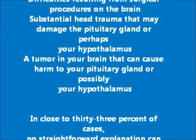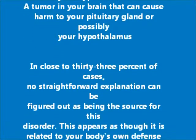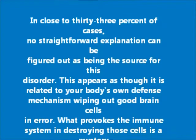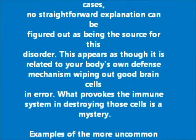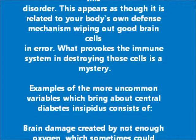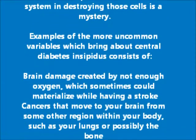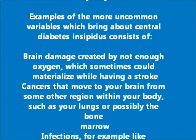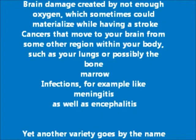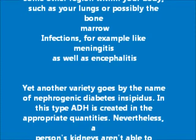In close to 33% of cases, no straightforward explanation can be figured out as the source for this disorder. This appears to be related to the body's own defense mechanism destroying good brain cells in error; what provokes the immune system in destroying those cells is a mystery. More uncommon causes include brain damage from lack of oxygen during a stroke, cancers that move to the brain from other regions such as the lungs or bone marrow, and infections like meningitis or encephalitis.